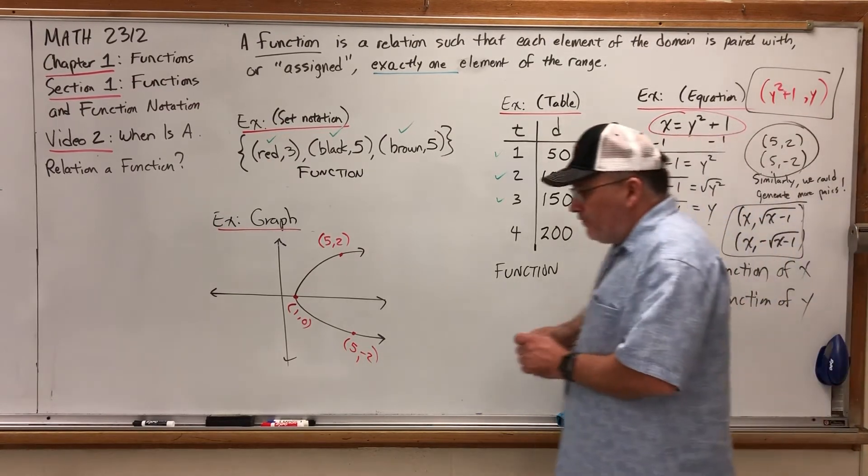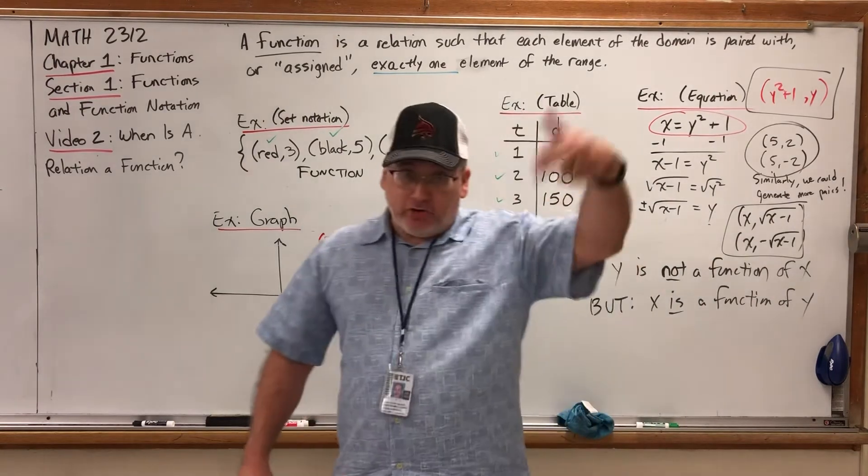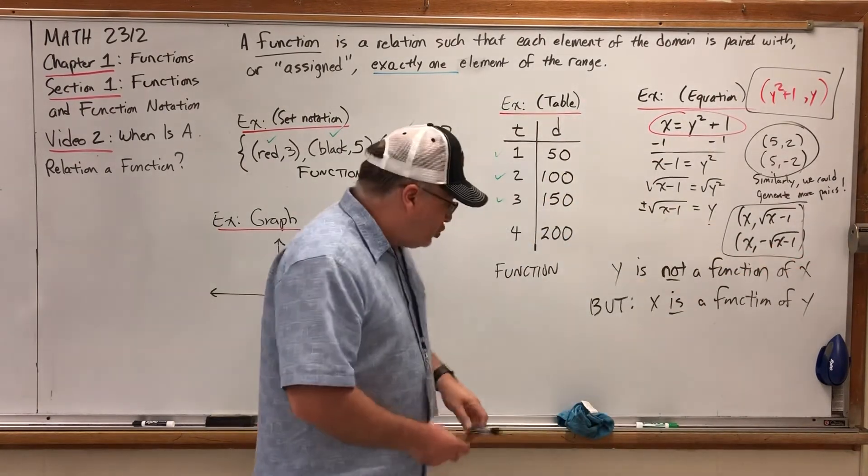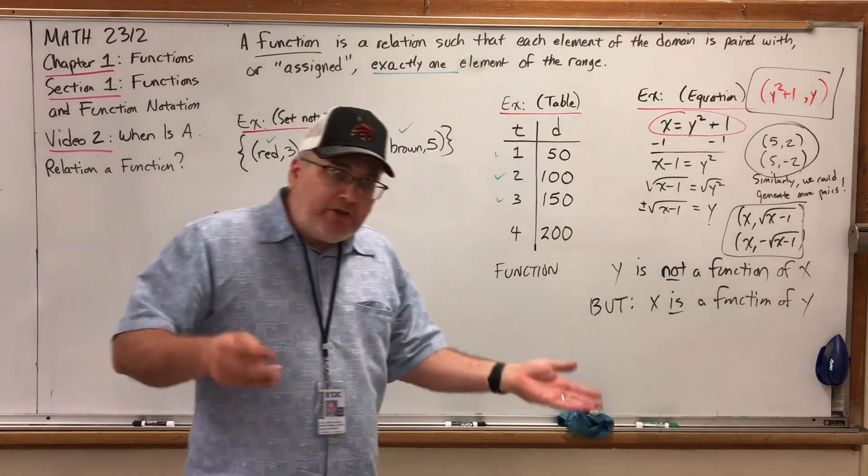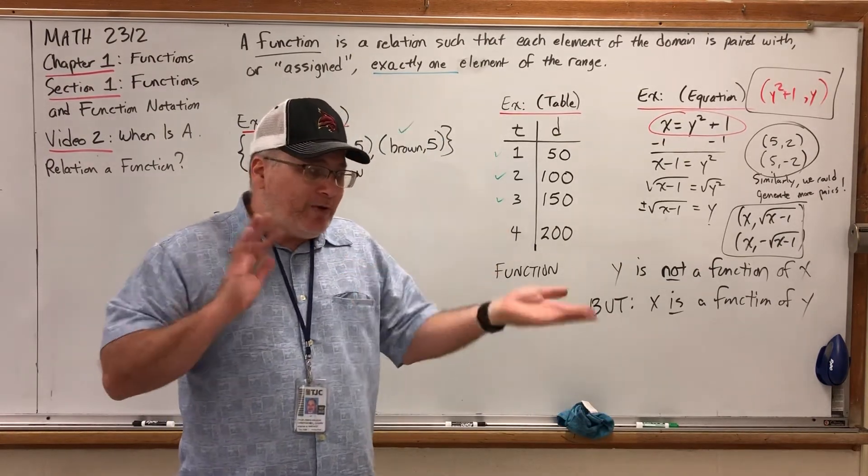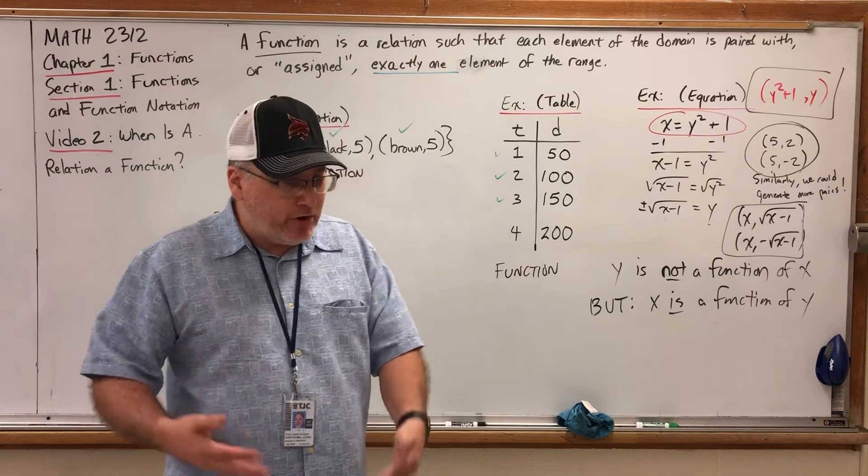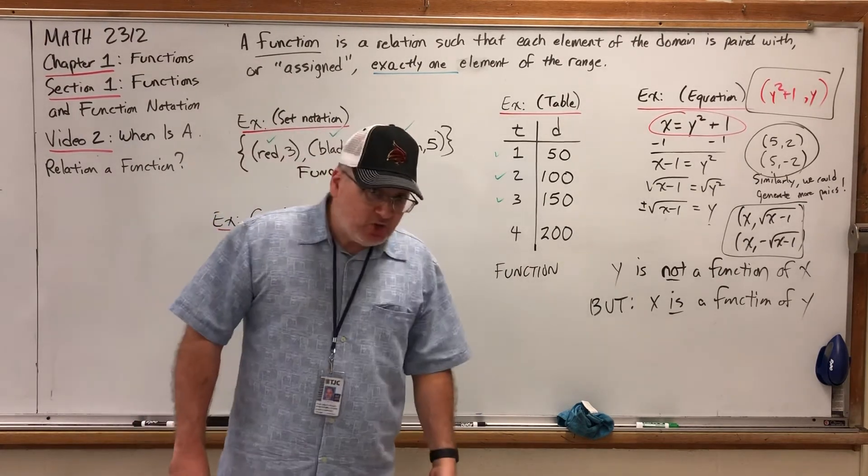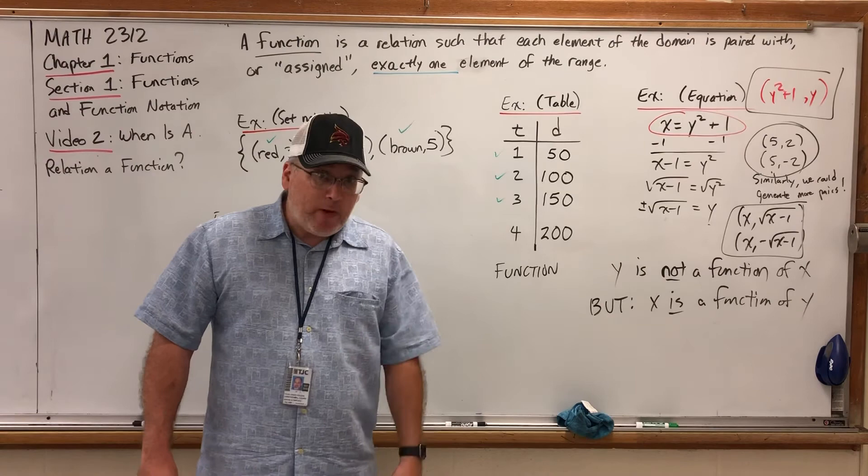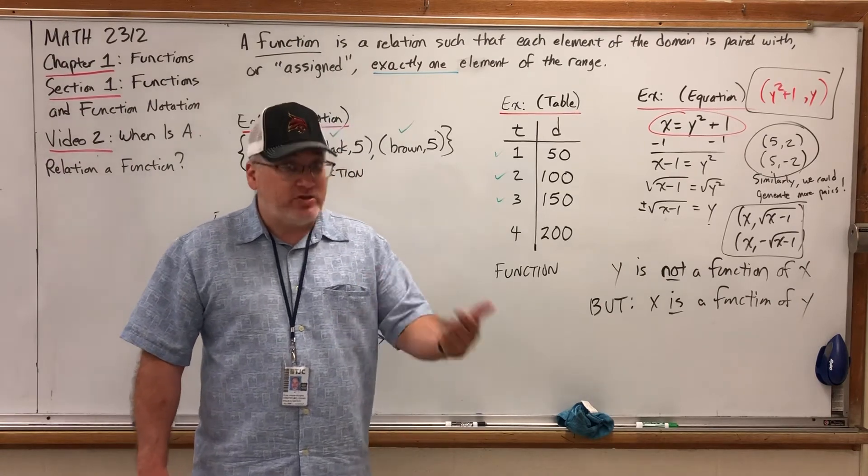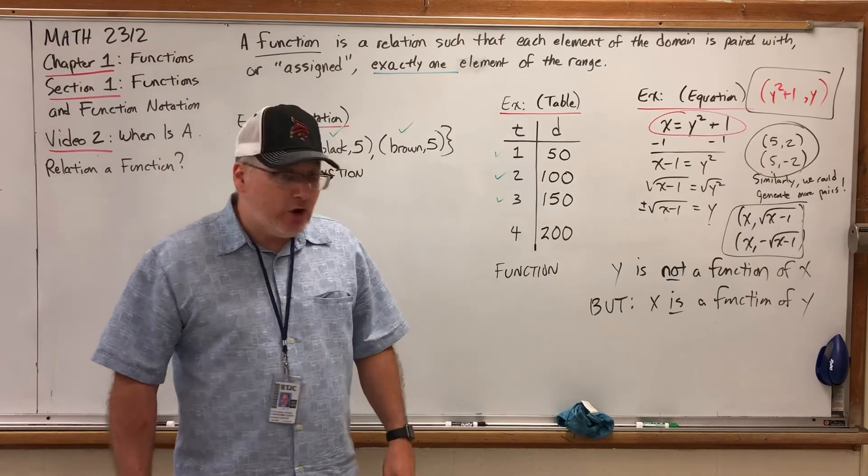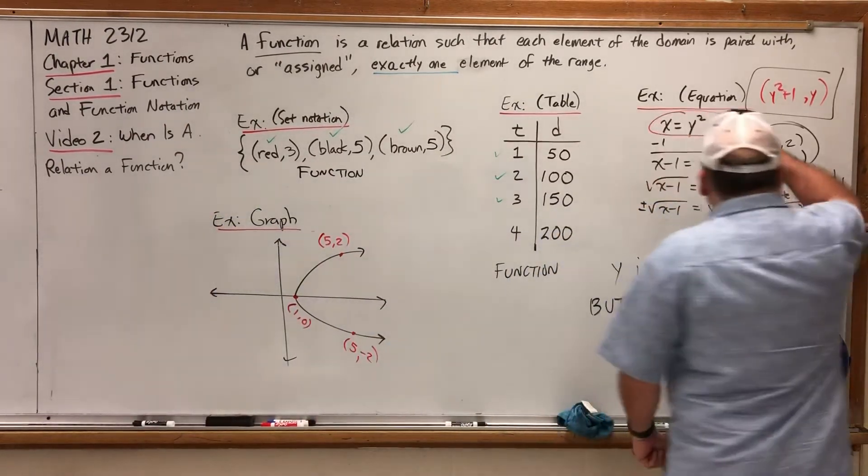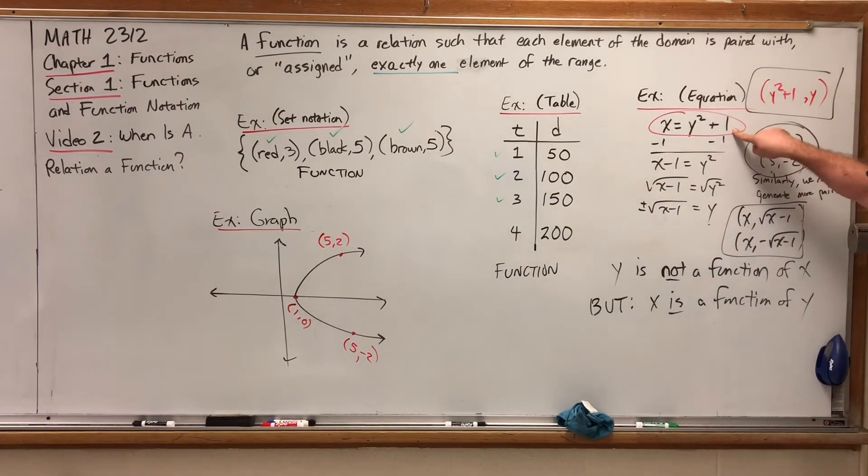The X is a function of the Y. Meaning that, for each Y value, we generate one X value. Try not to get so hung up on domain as X range is Y. Because the choice of X for domain and Y for range is completely arbitrary. I will admit that in most applications, the domain is represented by X and the range is represented by Y. But that choice is actually fairly arbitrary. This equation, X is a function of Y.